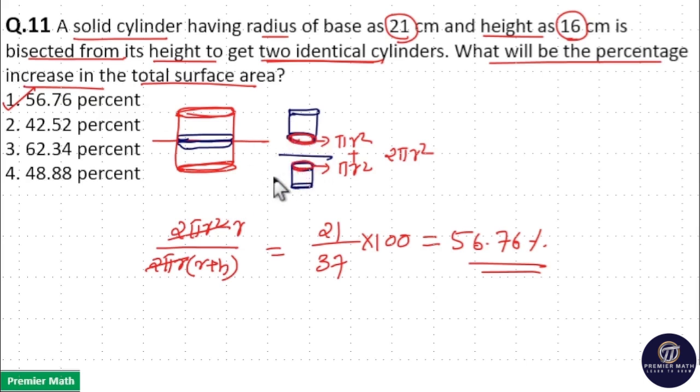Two additional bases. That's why increment is 2πr². You don't need this diagram. When you bisect, you are creating two bases. Two bases area increment is 2πr² divided by initial surface area into 100.